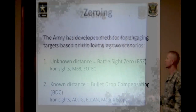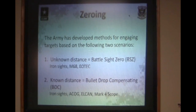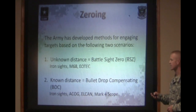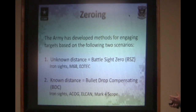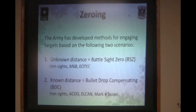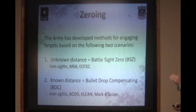The Army has developed two methods for engaging targets based on two scenarios. You have your unknown distance, which is your battle sight zero — your iron sights, your M68, your EOTECH, and so on. And then you have your known distance, which is called bullet drop compensating. Your iron sights can also be used as a bullet drop compensator. Your ACOG, your LCAN, your Mark IV scopes all have ranging reticles built in, which allows you to compensate for the drop of that bullet.